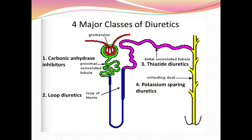First, carbonic anhydrase inhibitors — these act by inhibiting the carbonic anhydrase enzyme. Their site of action is the proximal convoluted tubule, which is a part of the nephron. Carbonic anhydrase inhibitors produce their action at the proximal convoluted tubule.